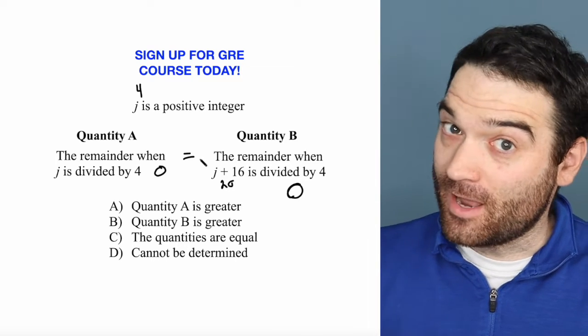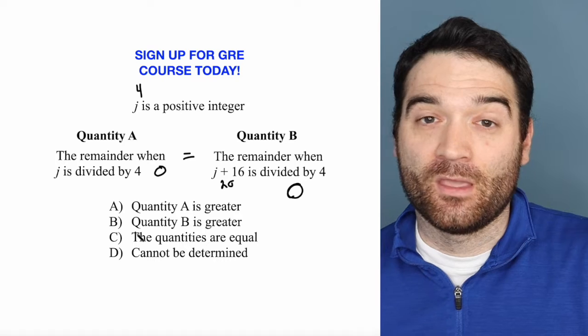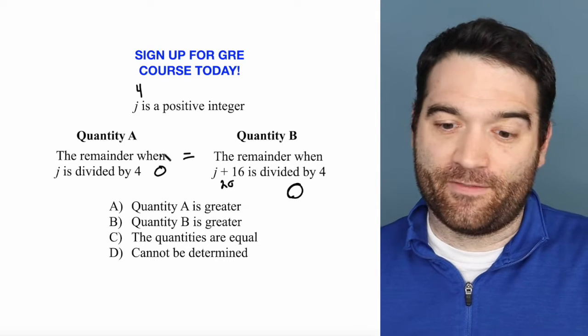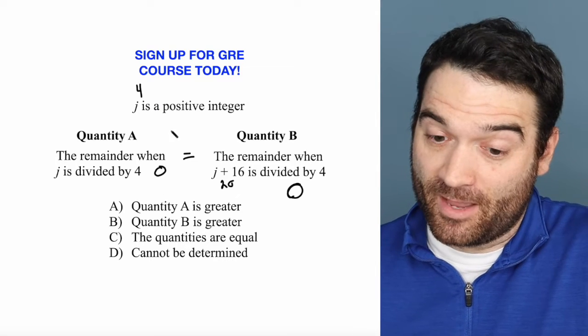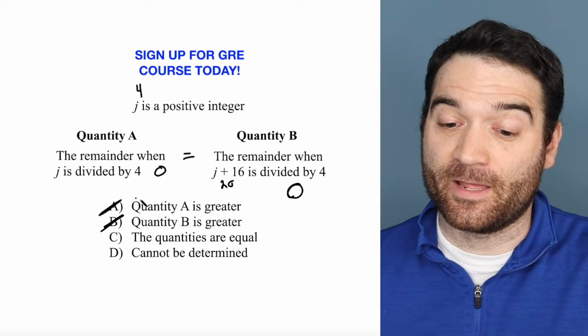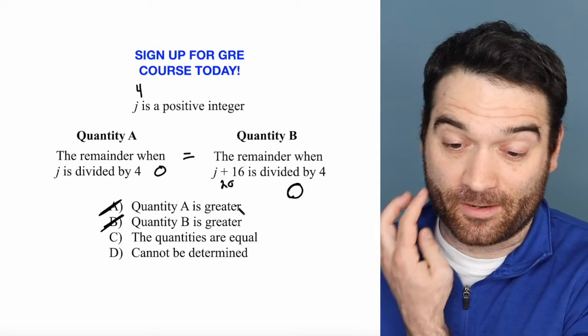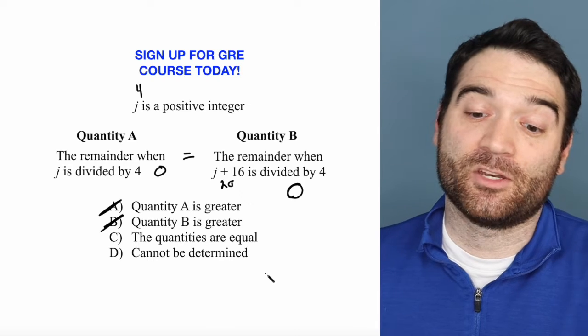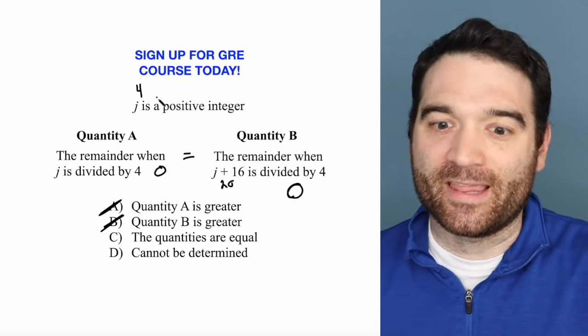So I have one case, just one, where these two quantities are equal. Well, I'm not sure yet if I can find a different case. Maybe I will, maybe I won't, but at the very least, I can get rid of A and B, right? Because I know that A is not always greater, and B is not always greater. So it's either C or cannot be determined. Now let's try to break this problem.